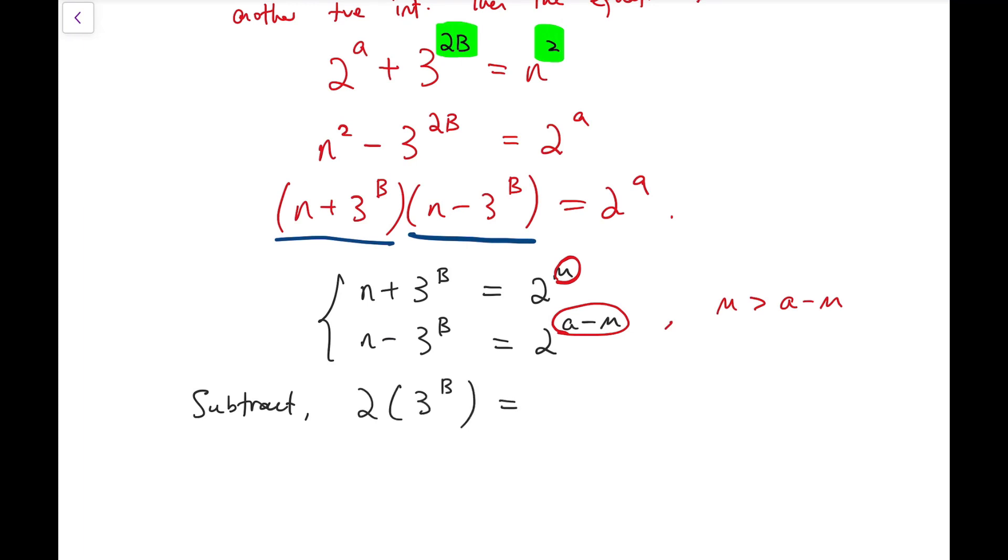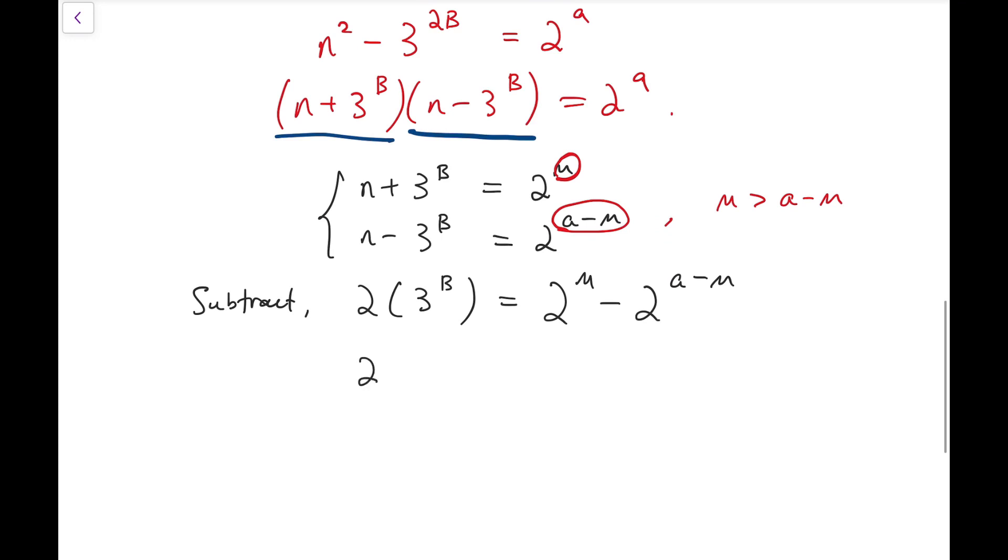we have 2 times 3 to the power of B equals 2 to the power m minus 2 to the power a minus m. So this equation involves only powers of 2 and a power of 3.